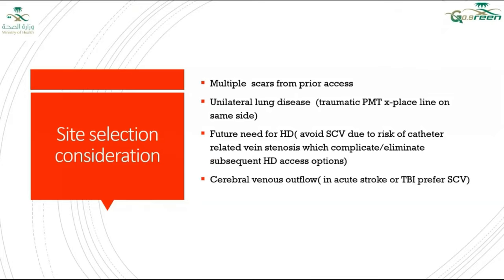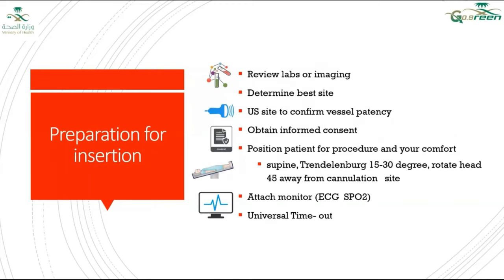Site selection considerations: if the patient has an AV fistula, if pneumothorax is present — insert on the same side as the pneumothorax, not the opposite side. For hemodialysis catheters, avoid the subclavian vein to decrease the risk of stenosis or thrombosis. In patients with raised intracranial pressure or TBI, the internal jugular approach can impair cerebral venous drainage, so it is better to avoid it in those situations.